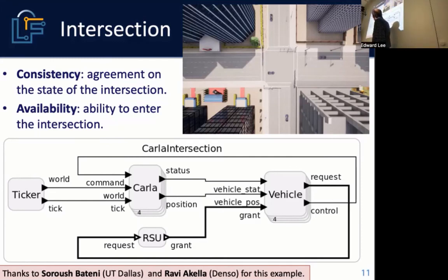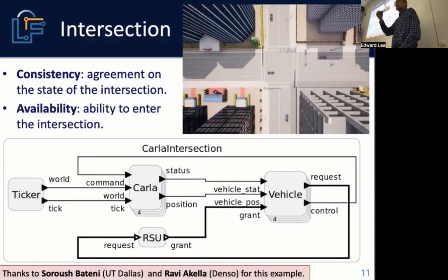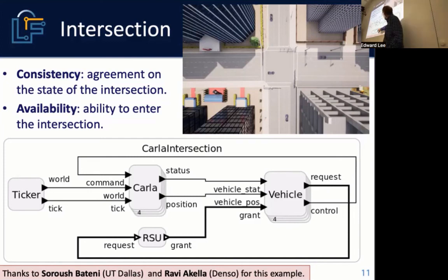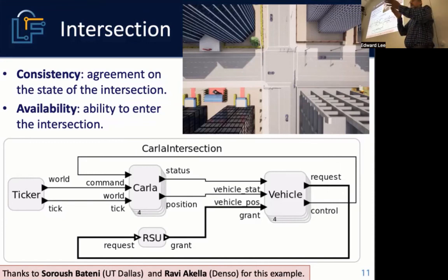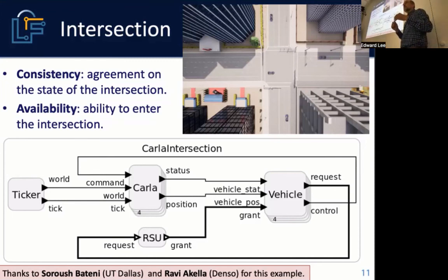Here's another Lingua Franca program built as a solution: a bank of four parallel vehicle simulators with a nice vision interface, four vehicle controllers, and a model of a roadside unit regulating access to a four-way intersection. A car approaching the intersection contacts the roadside unit, gives its position and velocity, and asks for a reservation so it can flow right through the intersection without stopping — with multiple vehicles approaching simultaneously.